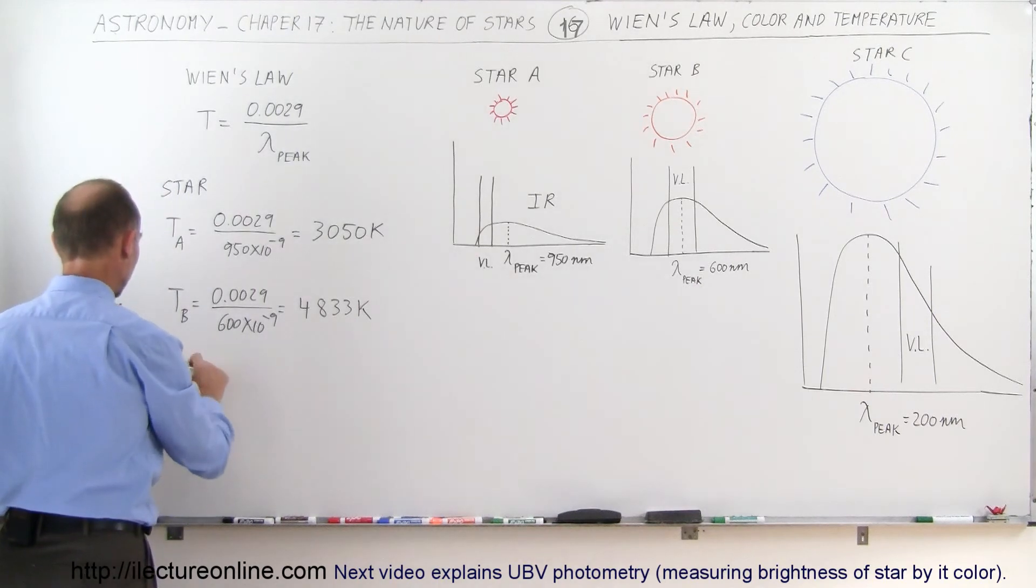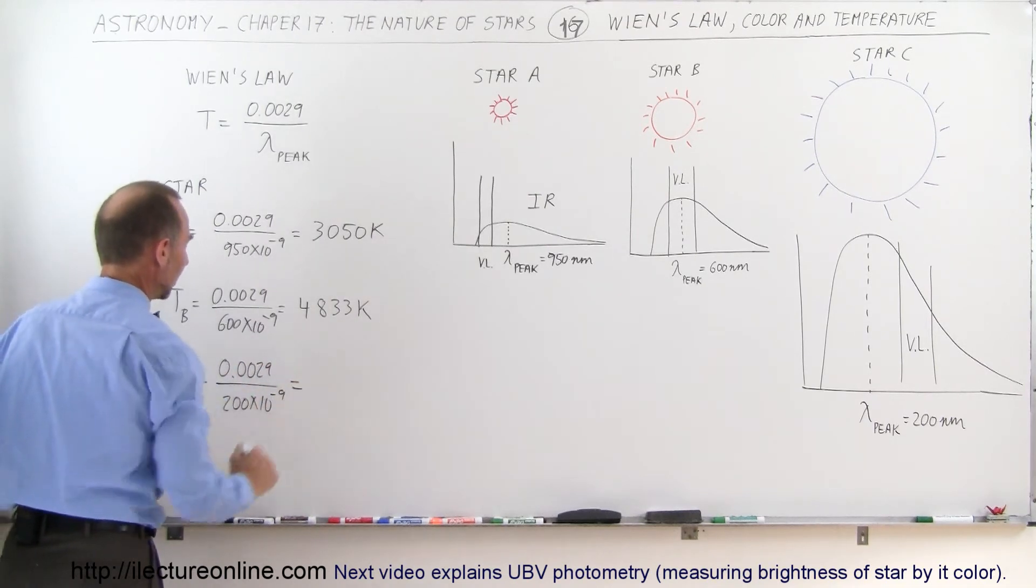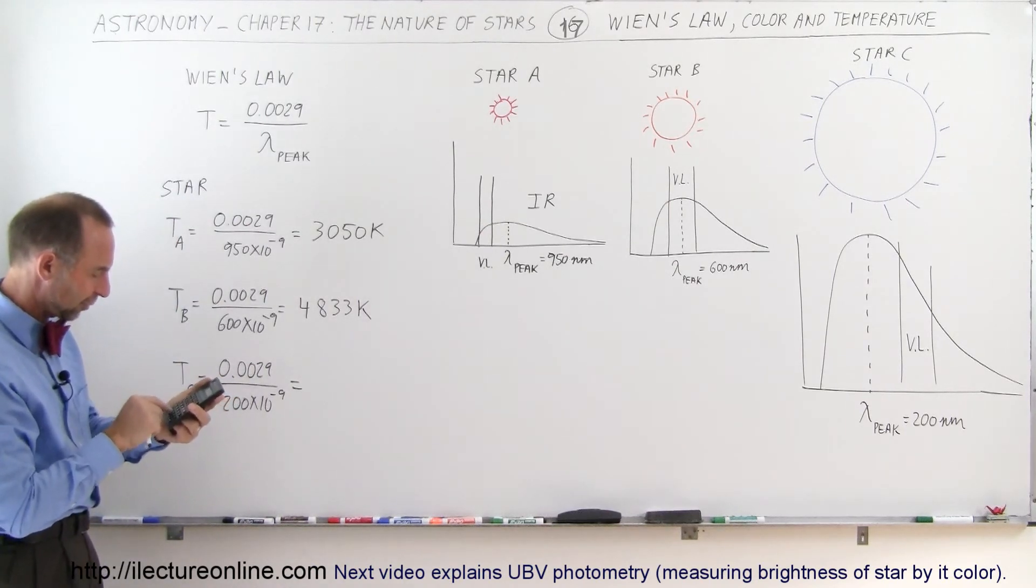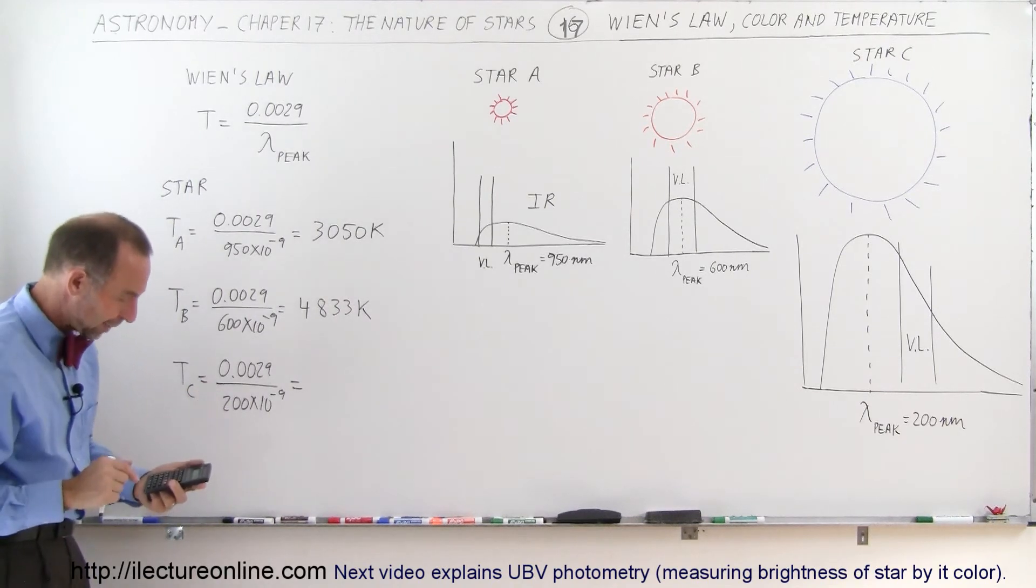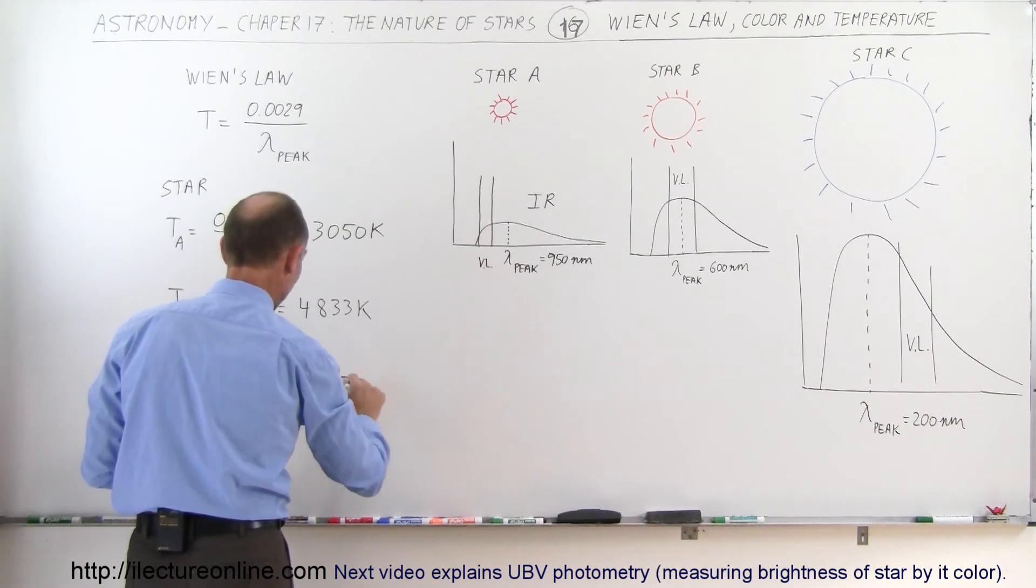Next, Star C. The temperature of Star C equals 0.0029 divided by 200 times 10 to the minus 9. This star would have a surface temperature of 14,500 Kelvin.